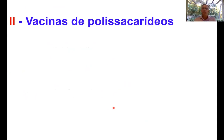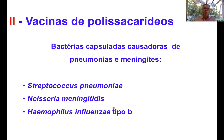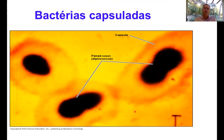O outro grupo de vacinas são as vacinas feitas a partir de polissacarídeos. Polissacarídeos são açúcares, grandes moléculas de açúcares que diversos micro-organismos apresentam, mas que nesse contexto de vacinas vão ser importantes para algumas bactérias. Existem algumas bactérias que causam doenças bastante importantes como pneumonia e meningites — dentre elas, o Streptococcus pneumoniae, a Neisseria meningitidis e o Haemophilus influenzae tipo B. Descobriu-se que essas bactérias têm uma cápsula em volta de si.